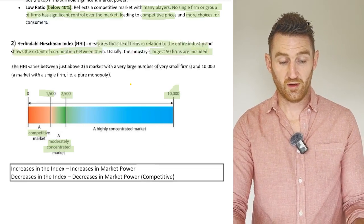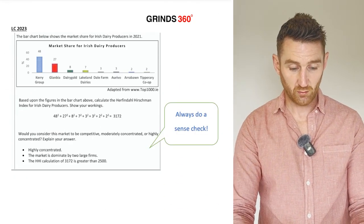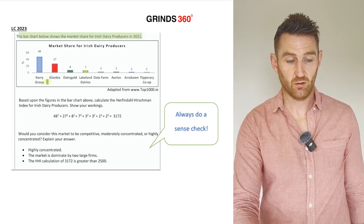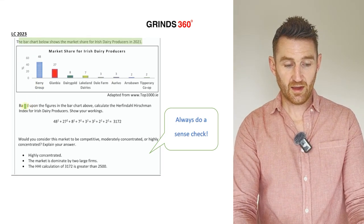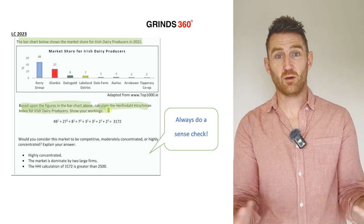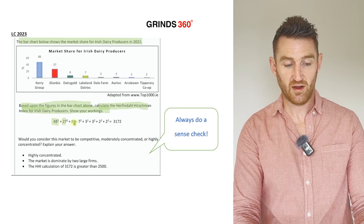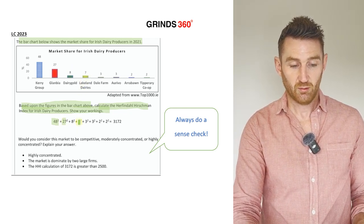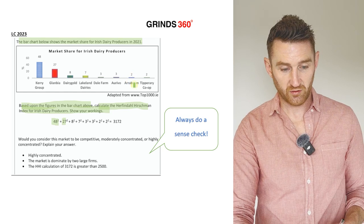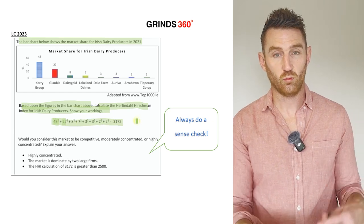Here's a 2023 exam question: a bar chart shows market share of Irish dairy producers in 2021, and you're asked to calculate the HHI showing your workings. You simply square each firm's market share and add them: Kerry Group 48 squared, plus Glanbia 27 squared, plus Dairygold 8 squared, plus Lakeland Dairy 7 squared, plus Dale Farm 3 squared, plus 2 squared, plus 2 squared — squaring the market share of all firms and adding them gives an answer of 3,172.